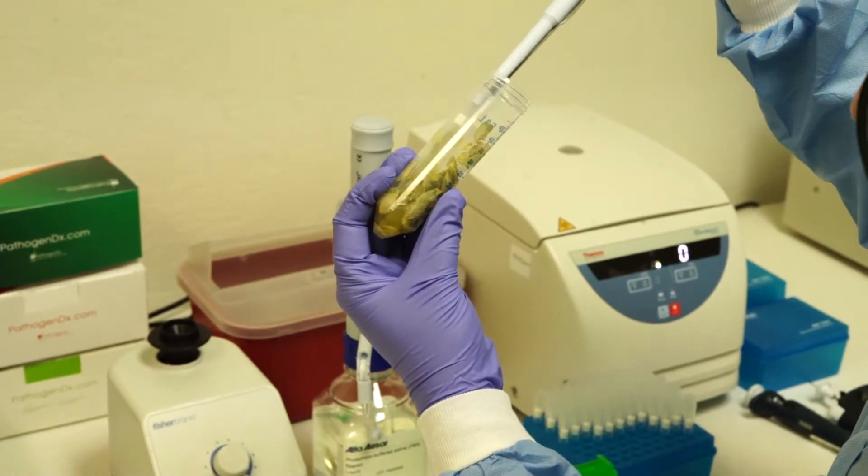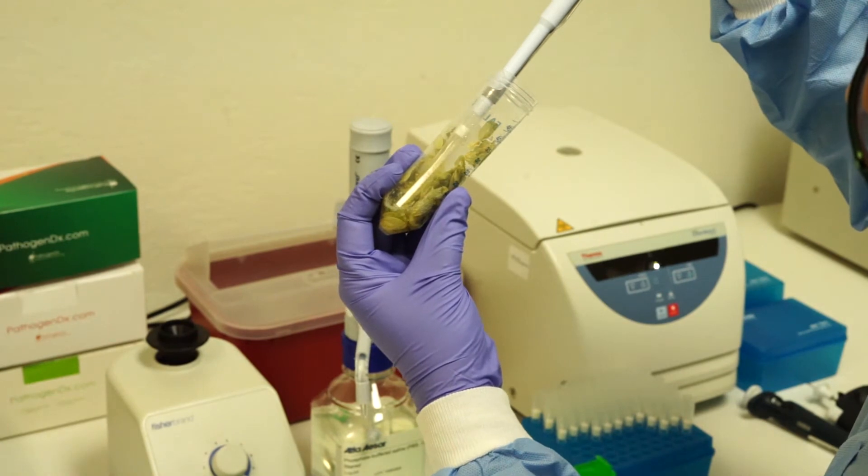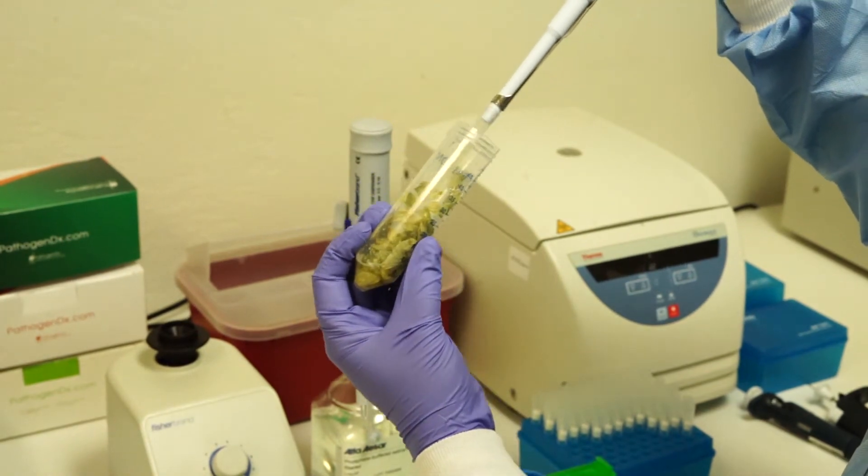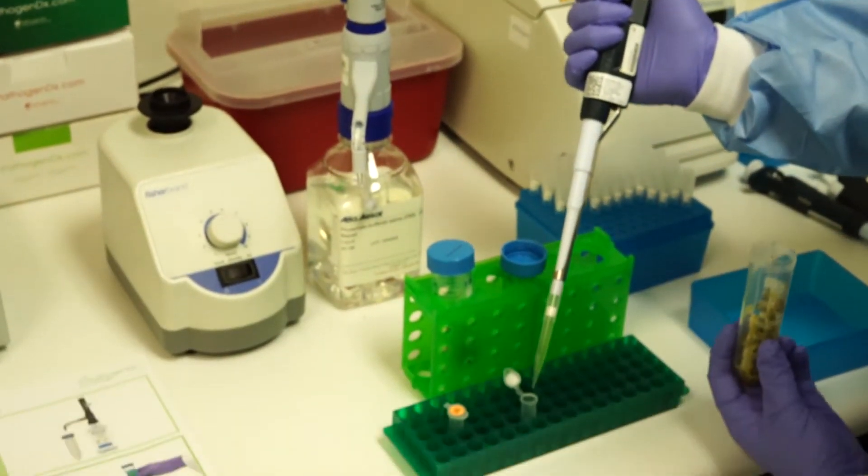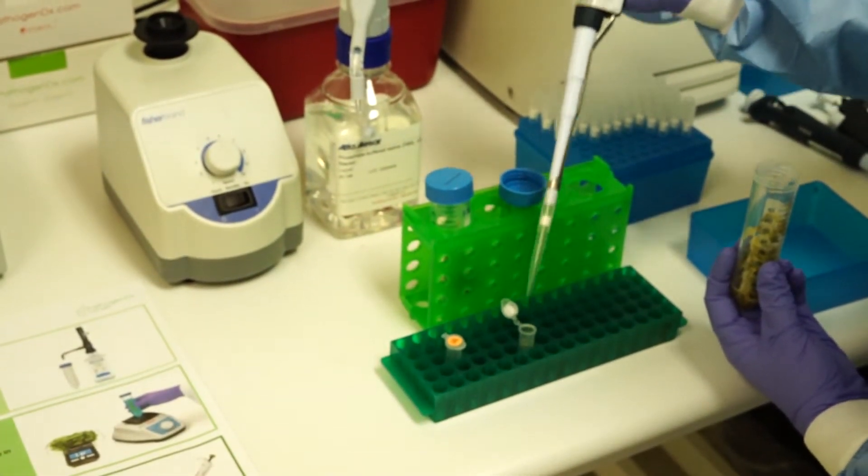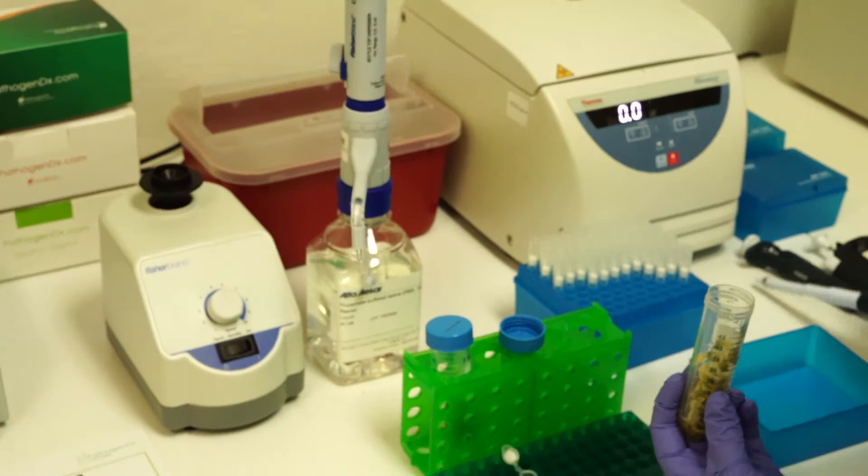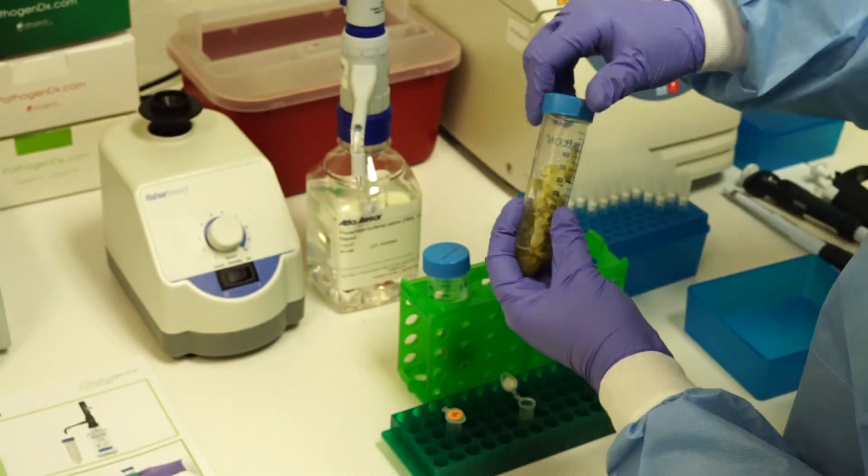It may be necessary to push the plant material out of the way using the pipetter. Once you have obtained 1 ml, transfer to the 1.5 ml tube and make sure to change tips between each sample to avoid cross-contamination.